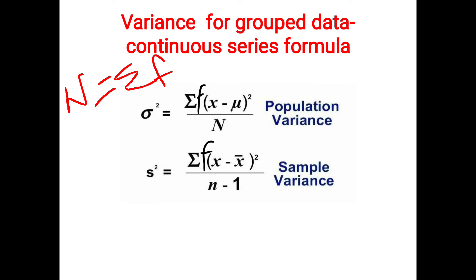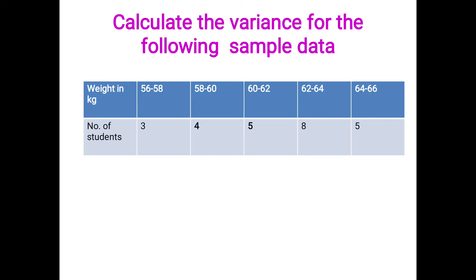Now we will move on to calculating the variance for the following sample data. We need to calculate sample variance. The given data shows weight in kg and number of students: 56 to 58 kg — 3 students; 58 to 60 kg — 4 students; 60 to 62 kg — 5 students; 62 to 64 kg — 8 students; and 64 to 66 kg — 5 students.